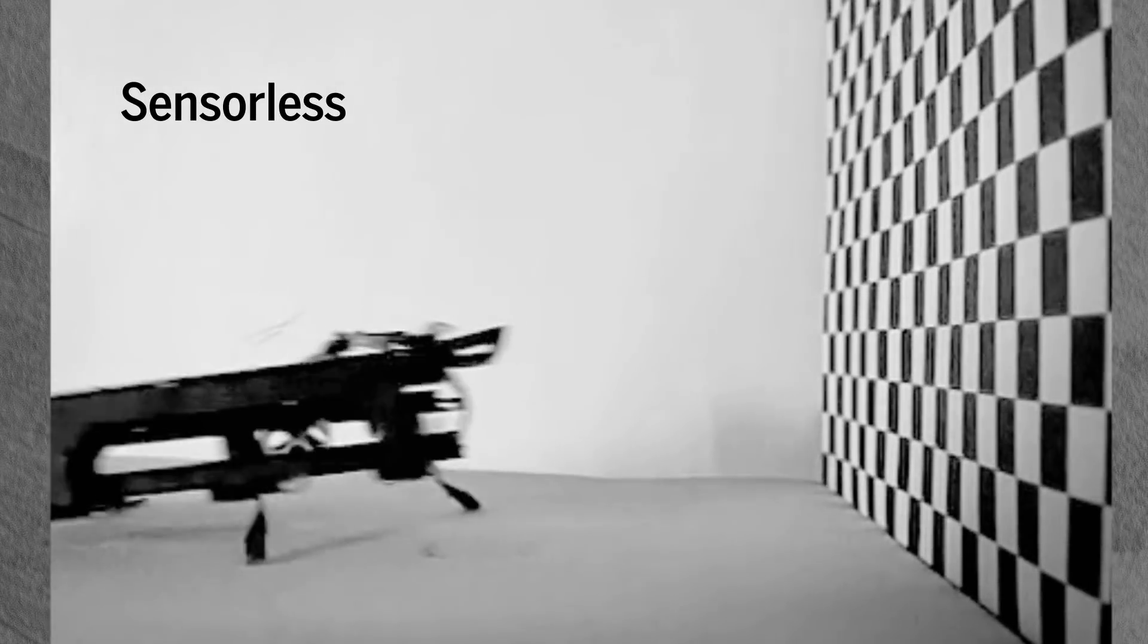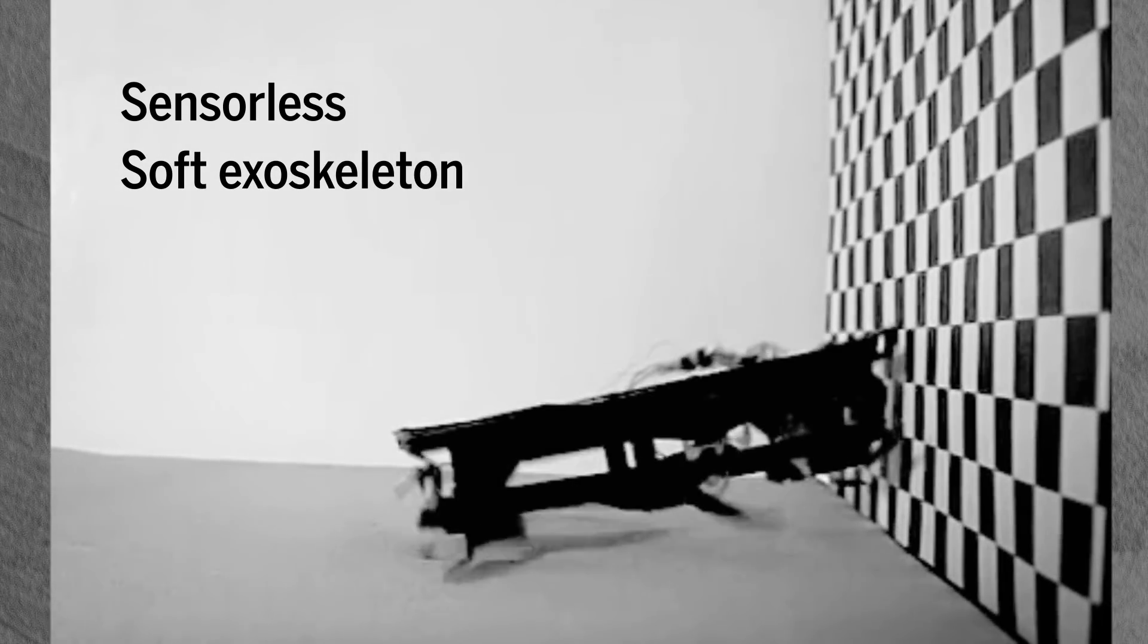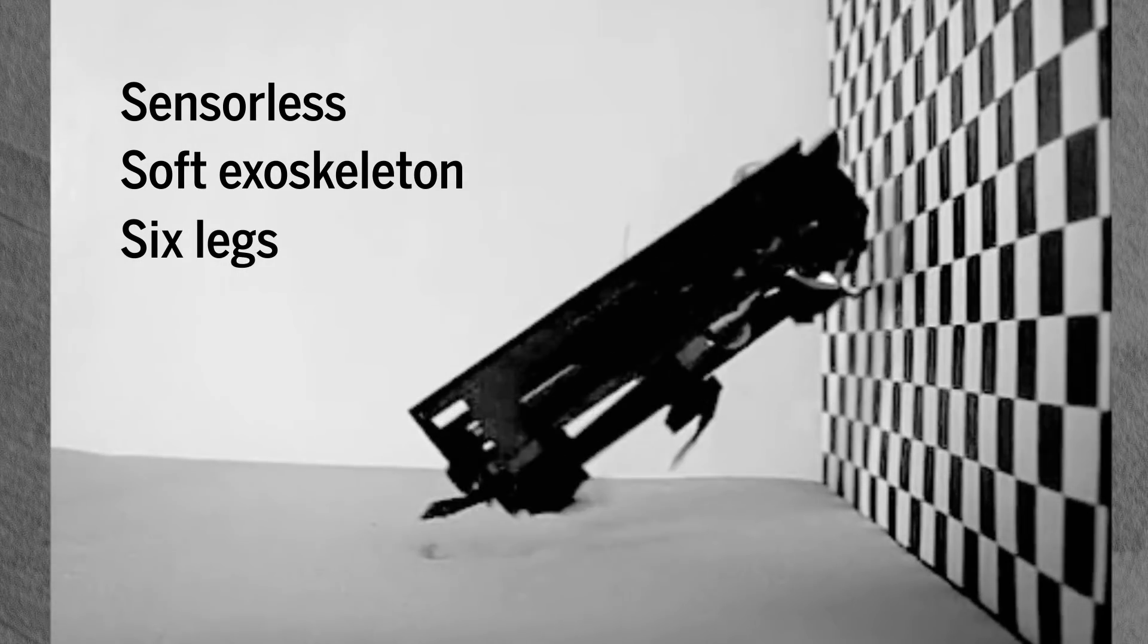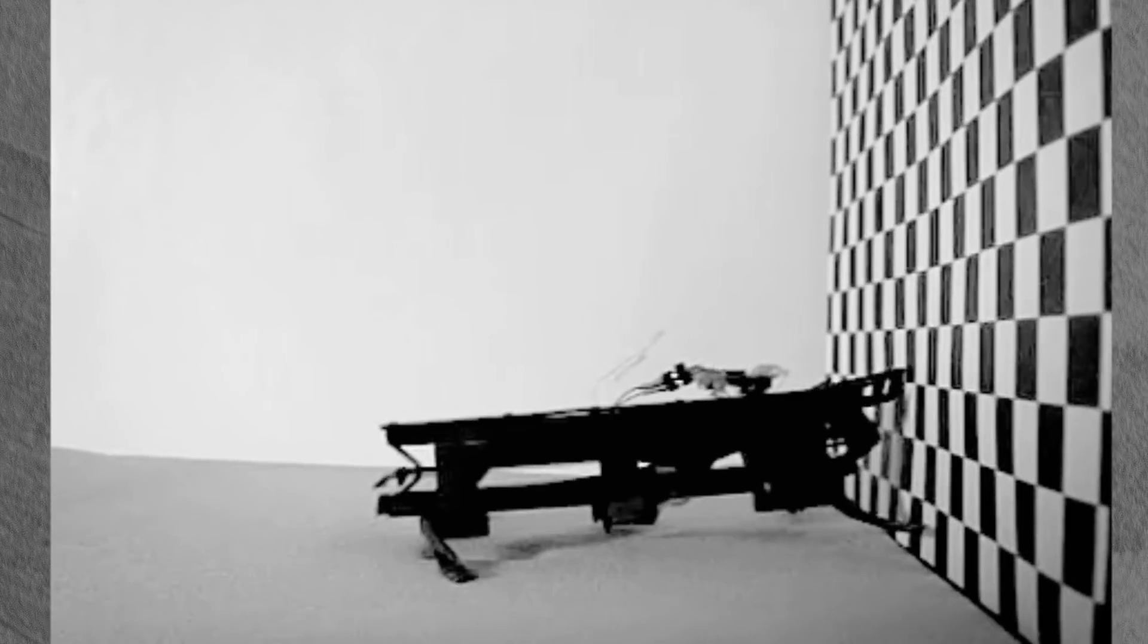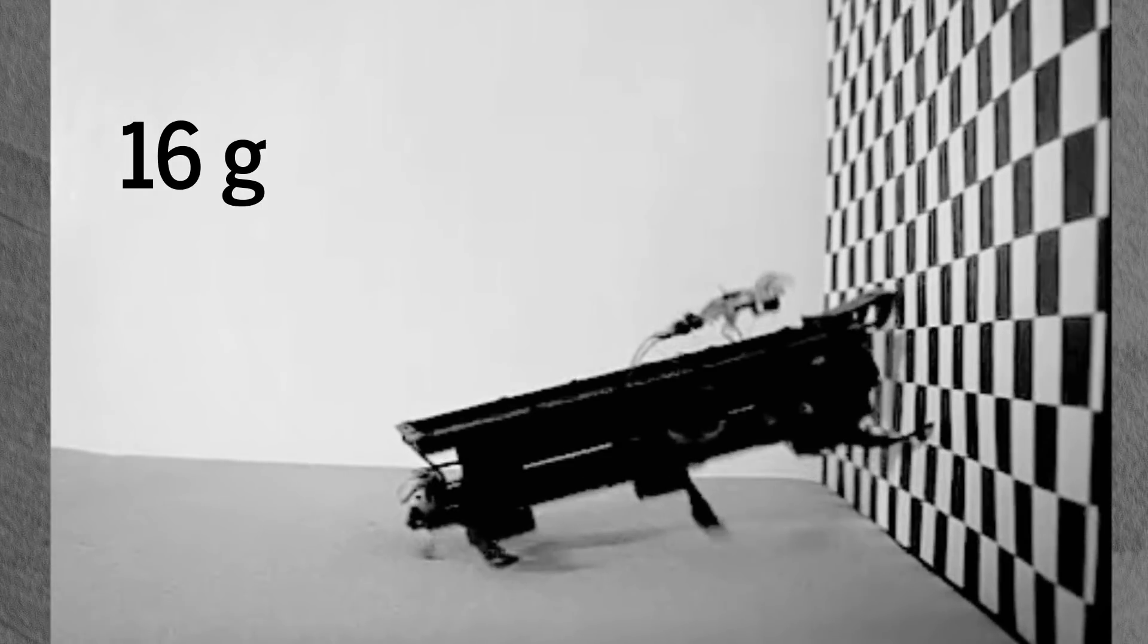So scientists developed a sensorless, cockroach-sized robot with a soft exoskeleton and six legs. It, too, can shift from horizontal to vertical movement by simply crashing into a wall. The big secret to its success is its tiny size, a mere 16 grams.